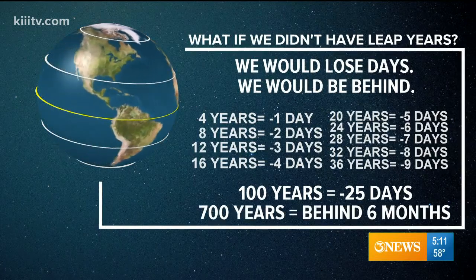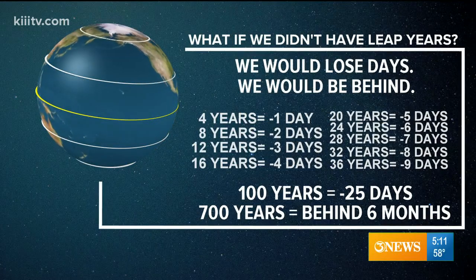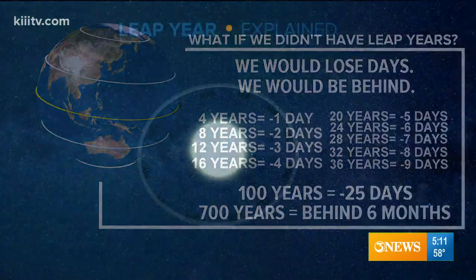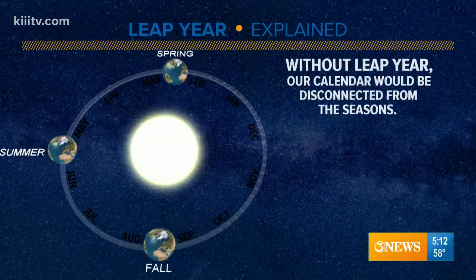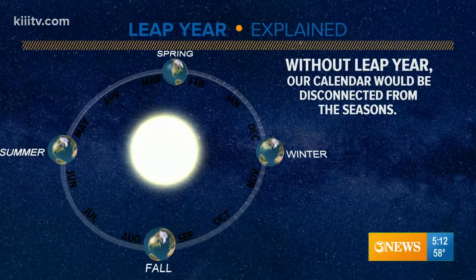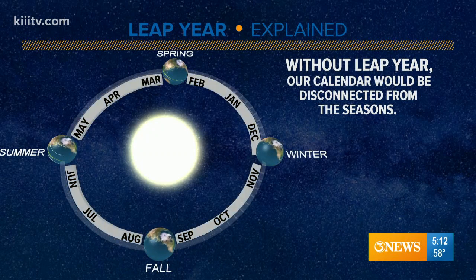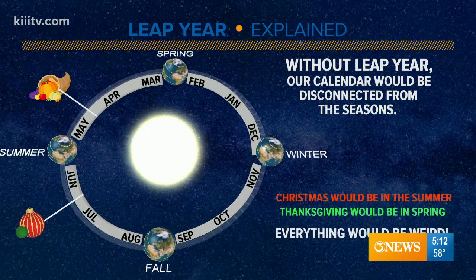It's not until we get down to generation to generation — 700 years — that's when we would be behind six months. So that would be a problem for the seasons, because without leap year our calendar would be disconnected from the seasons. If that did happen and we did not acknowledge leap year, Christmas would fall in early summer, Thanksgiving would be in late spring.